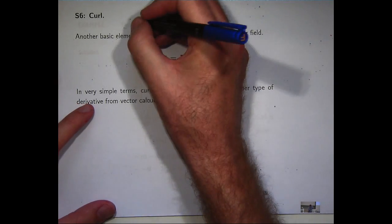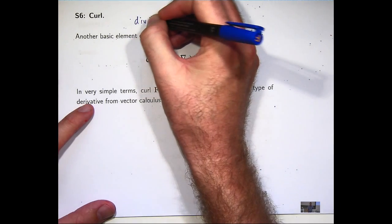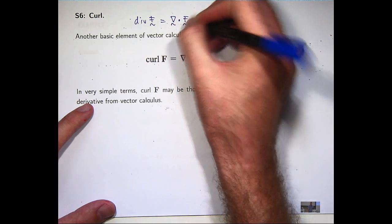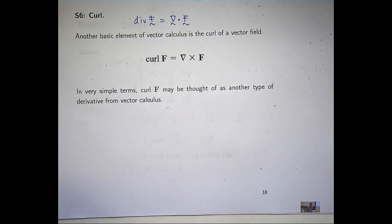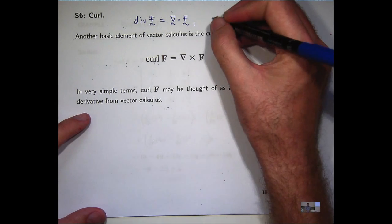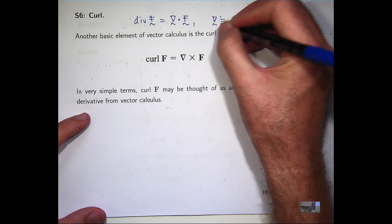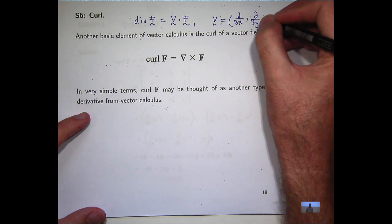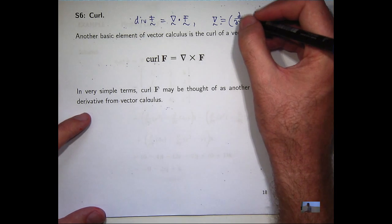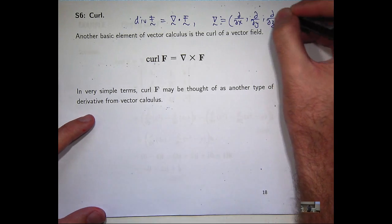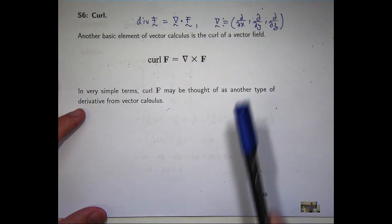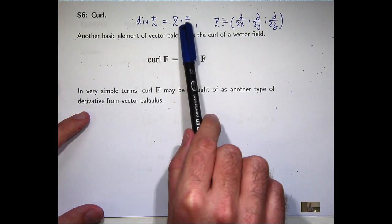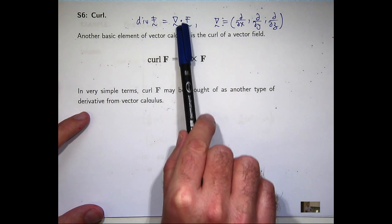Last time, we looked at the divergence of a vector field being defined through the del operator. The del operator is a symbolic operator with partial derivatives, or partial differential operators as components. We can connect this with a vector field through the scalar, or dot product.